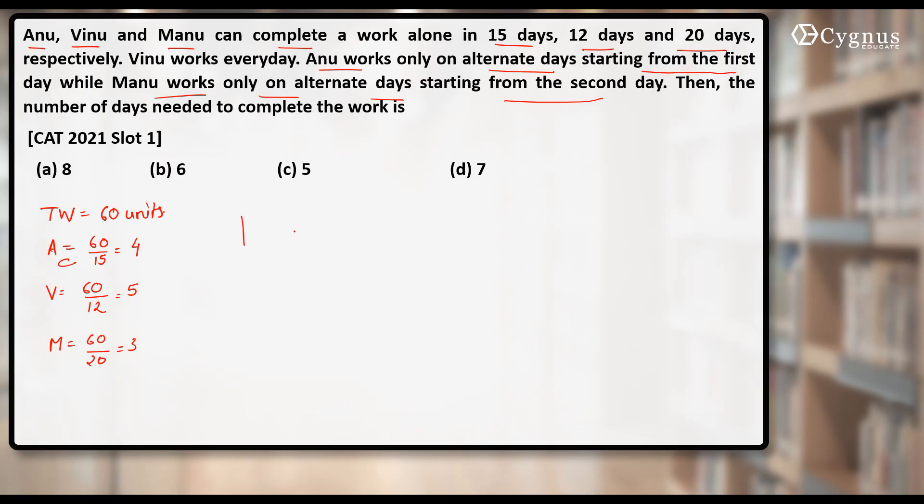Now how are they going to work? On the very first day, who will be working? Vinu works every day, that means Vinu will be working with Anu, because Anu works only on alternate days. Second day Vinu will be working, Anu will be absent. Who will join? Manu works only on alternate days starting from the second day, that means on second day Vinu will be working with Manu.